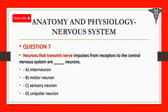Question 7: Neurons that transmit nerve impulses from receptors to the central nervous system are: A. Interneuron. B. Motor neuron. C. Sensory neuron. D. Unipolar neuron.